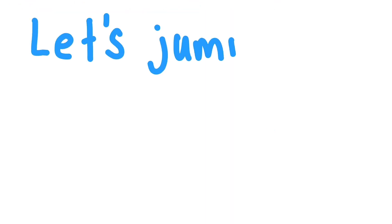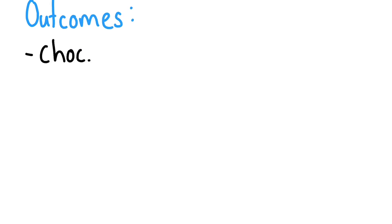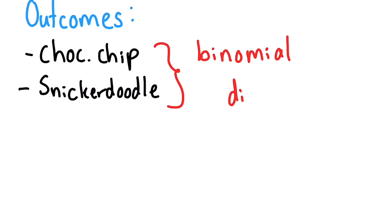Enough of the theory, let's see it in practice. In our cookie example, we have two outcomes. We can either get a chocolate chip cookie or a snickerdoodle cookie. The distribution function that models the situation where there are two outcomes is called a binomial distribution.